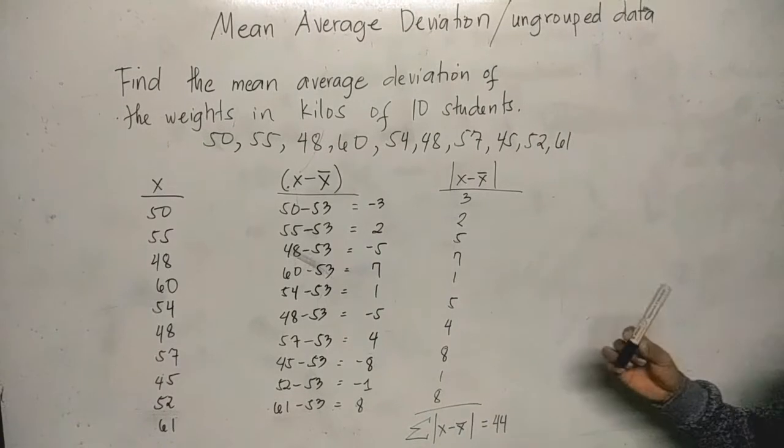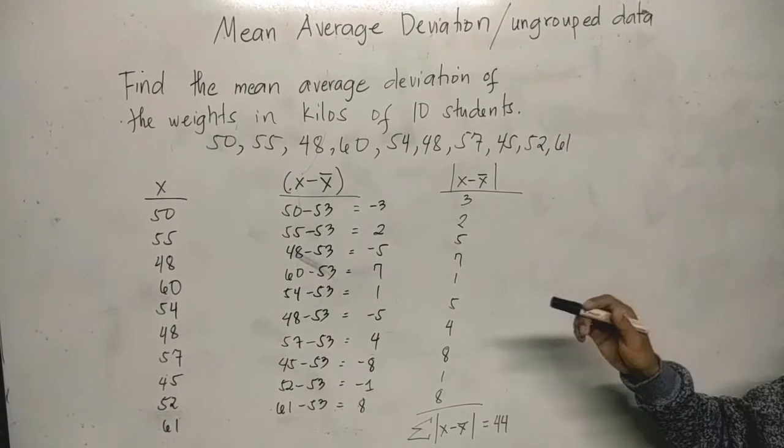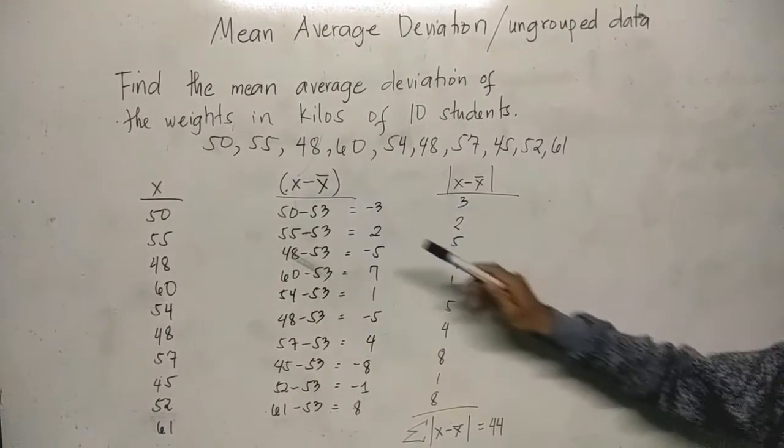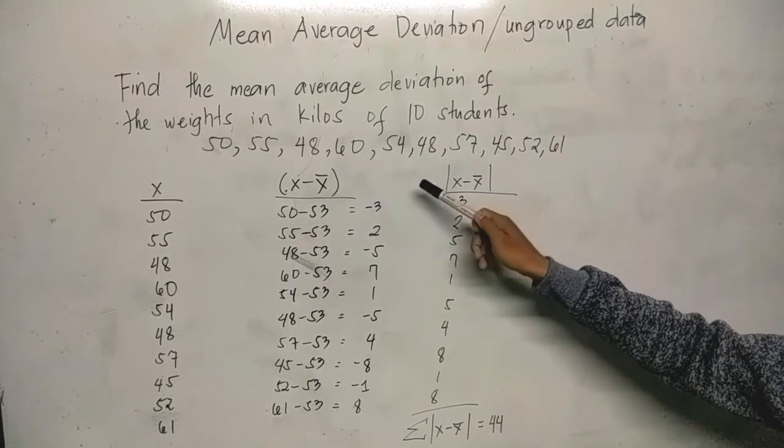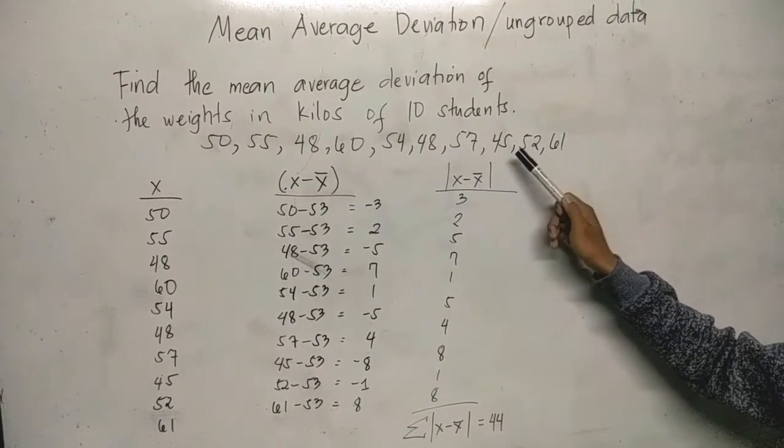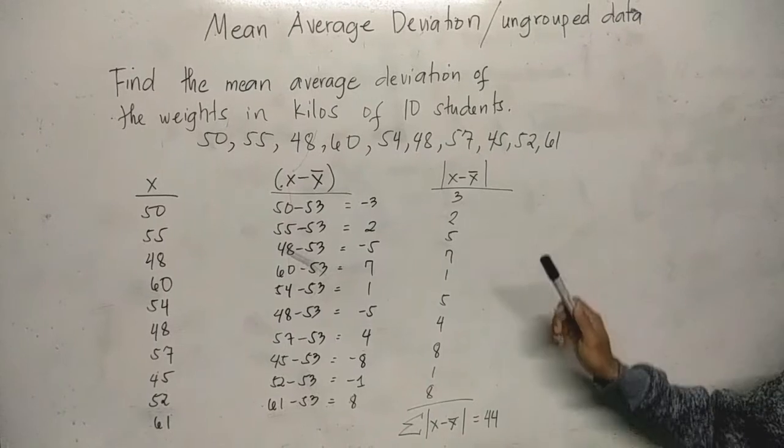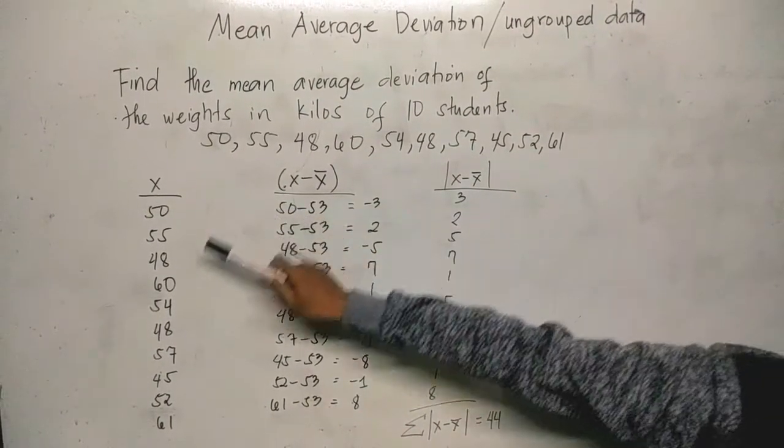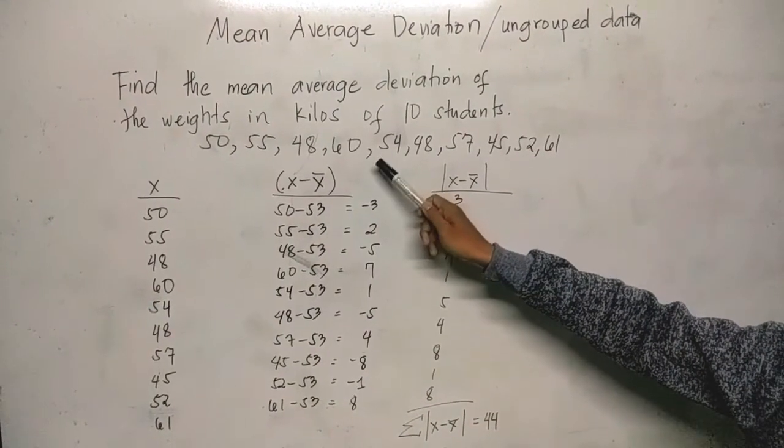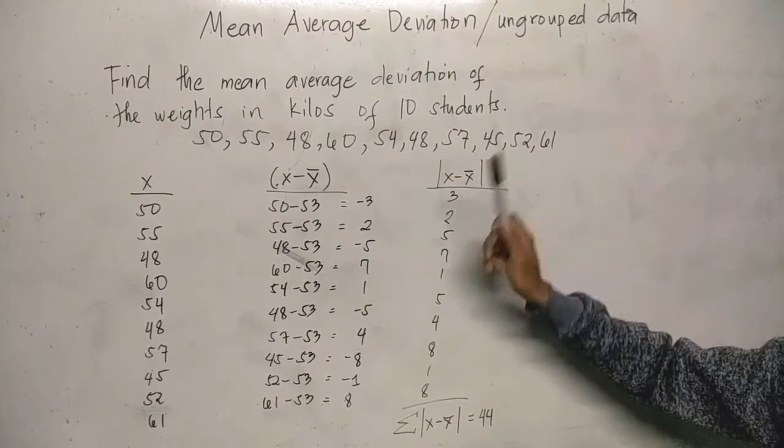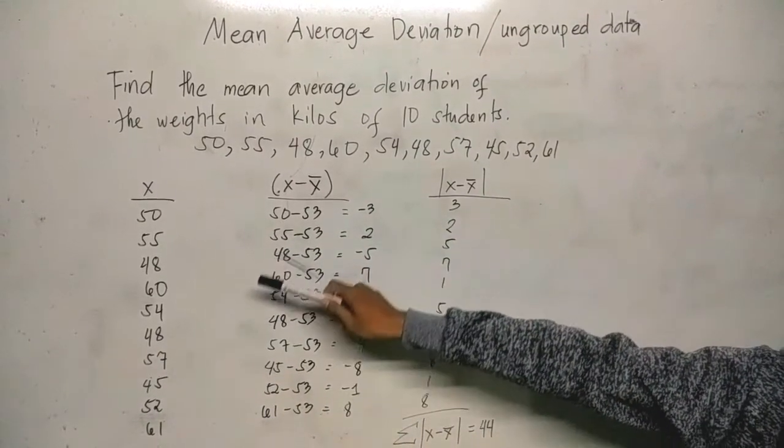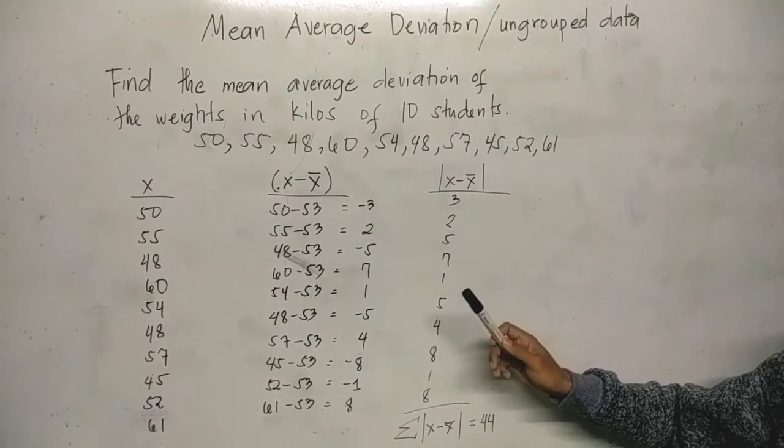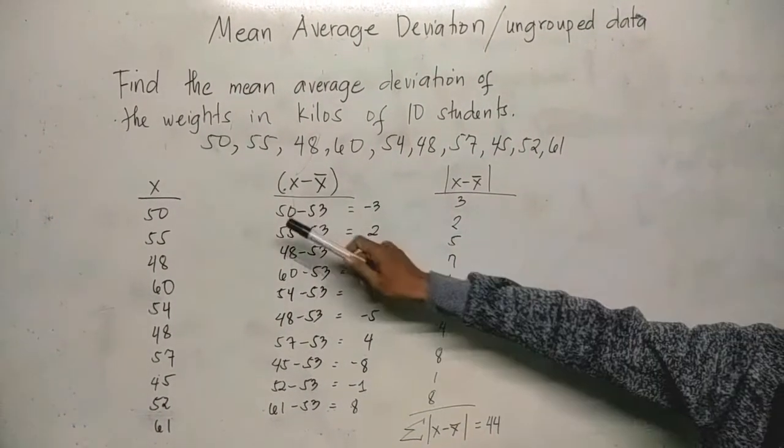Without further ado, we have here an example. Find the mean average deviation of the weights in kilos of 10 students. These are the weights in kilos: 50, 55, 48, 60, 54, 48, 57, 45, 52, and 61. So we have x, the individual score or individual weights in kilos of the students, written vertically from 50 to 61.